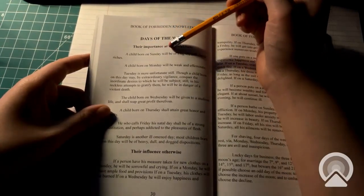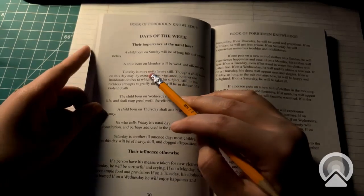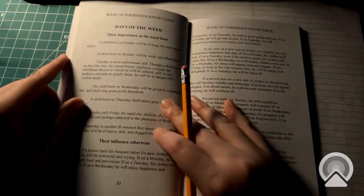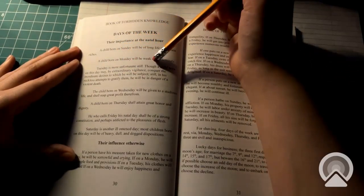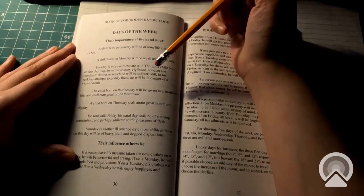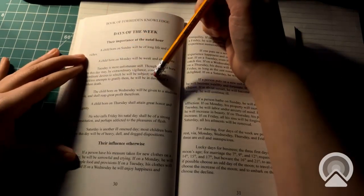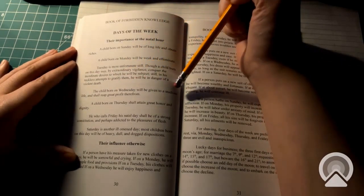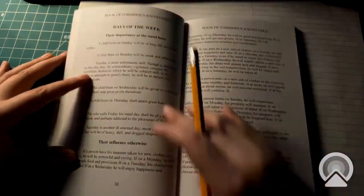A child born on Sunday will be of long life and obtain riches. A child born on Monday will be weak and effeminate. Tuesday is more unfortunate still. Though a child born on this day may, by extraordinary vigilance, conquer the inordinate desires to which he will be subject. Still, in his reckless attempts to gratify them, he will be in danger of a violent death. Oh, that's pretty extreme. On a Tuesday.